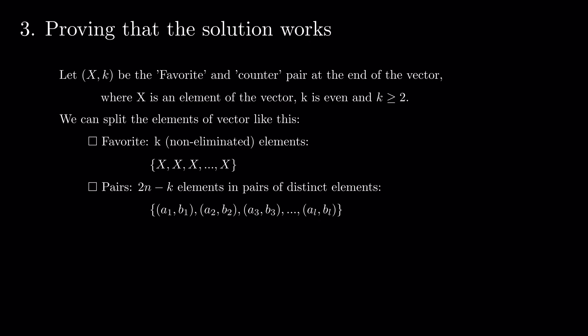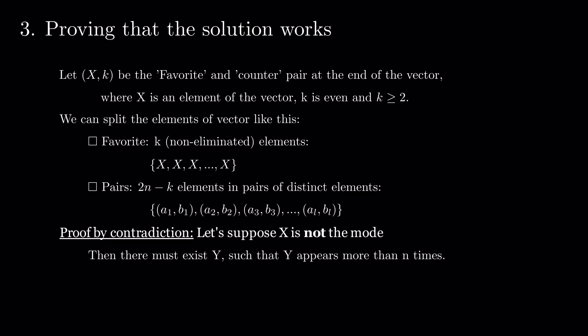Suppose that X is not the mode. Then there must be Y such that the frequency of Y is more than n. But Y can only appear in the second group and at most once in every pair, so it has at most (2n minus k) divided by 2 apparitions, which is less than n. This comes in contradiction with our initial supposition, so the favorite is the mode.